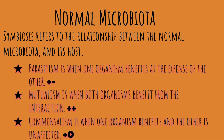Mutualism is another symbiotic relationship where both organisms benefit from an interaction. The relationship between a zebra and an oxpecker is a popular example: the oxpecker lands on the zebra and picks off its pests and ticks, getting food in return, while the zebra gets pest control. This is a positive-positive relationship because both organisms benefit.